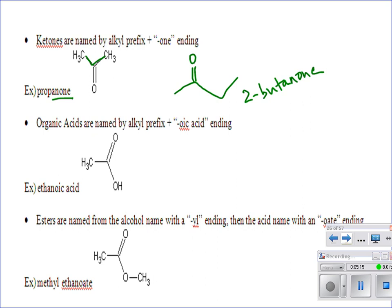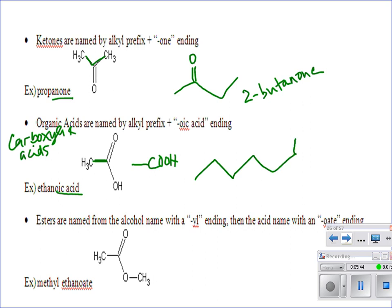Organic acids, also known as carboxylic acids, end in -COOH, where the carbon is double bonded to one oxygen and also bonded to an OH group. Name it like an alkane — that's ethane — then drop the -e and add -oic acid: ethanoic acid. These are always terminal, so you never need a number. A six-carbon chain would be hexanoic acid.